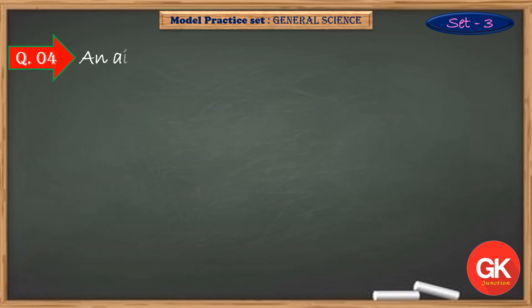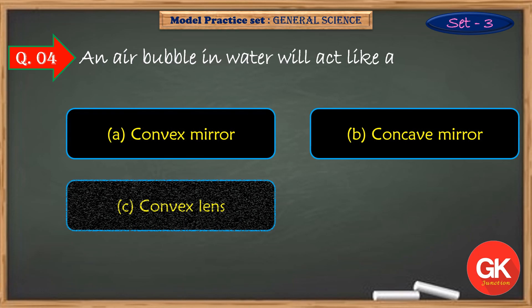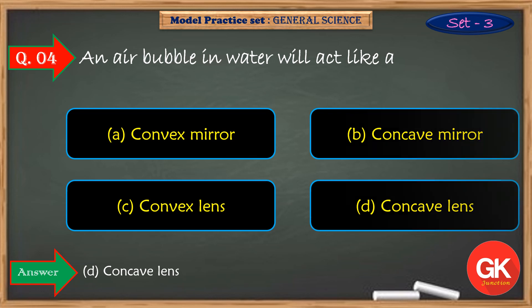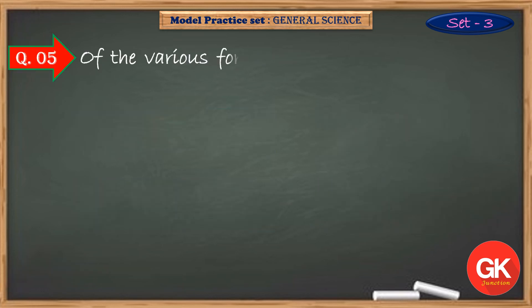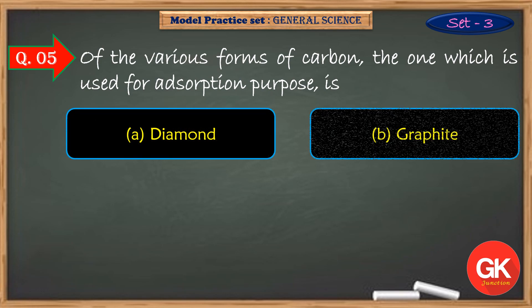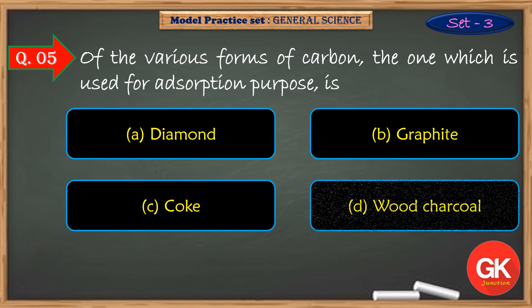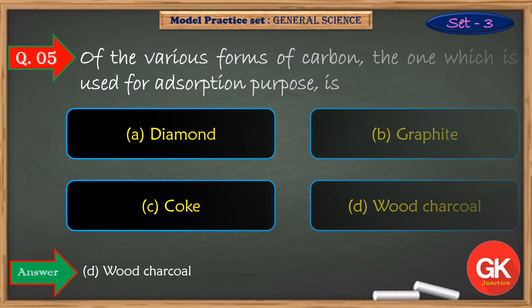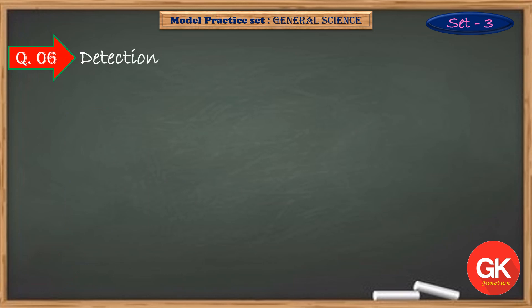An air bubble in water will act like it. Of the various forms of carbon, the one which is used for adsorption purpose is. Detection of RH factor is an example of.